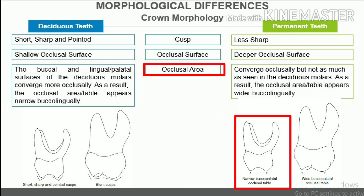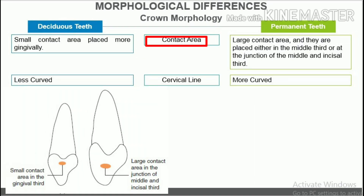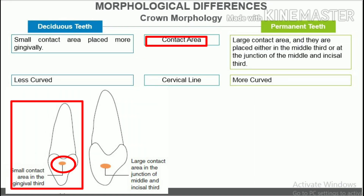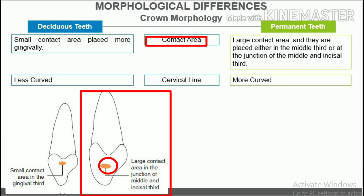Occlusal area. The buccal and lingual/palatal surfaces of the deciduous molars converge more occlusally; as a result, the occlusal area or table appears narrow buccolingually. The buccal and lingual/palatal surfaces of the permanent premolars and molars also converge occlusally but not as much as in deciduous molars; as a result, the occlusal area or table appears wider buccolingually. Contact area. The crowns of primary teeth have a small contact area placed more gingivally. The crowns of permanent teeth have a large contact area placed either in the middle third or at the junction of the middle and incisal third.